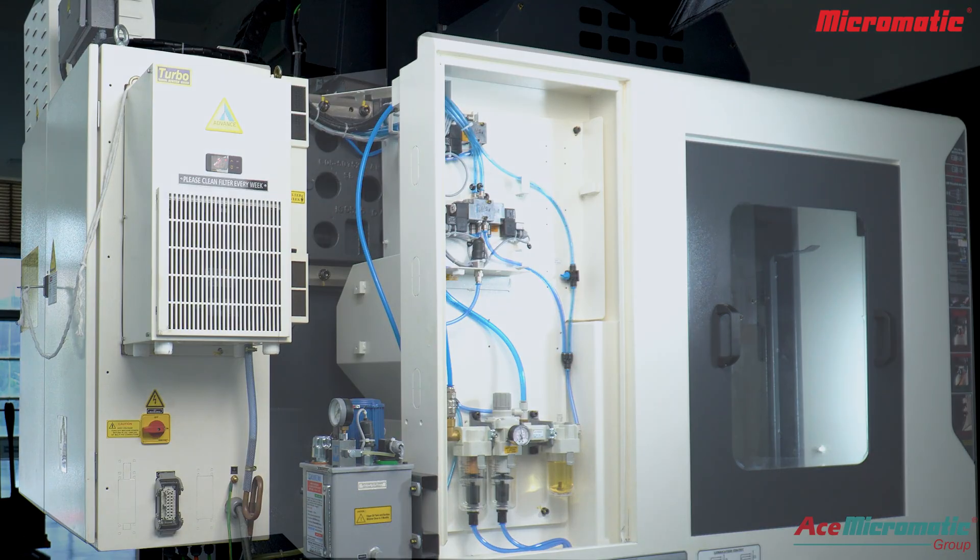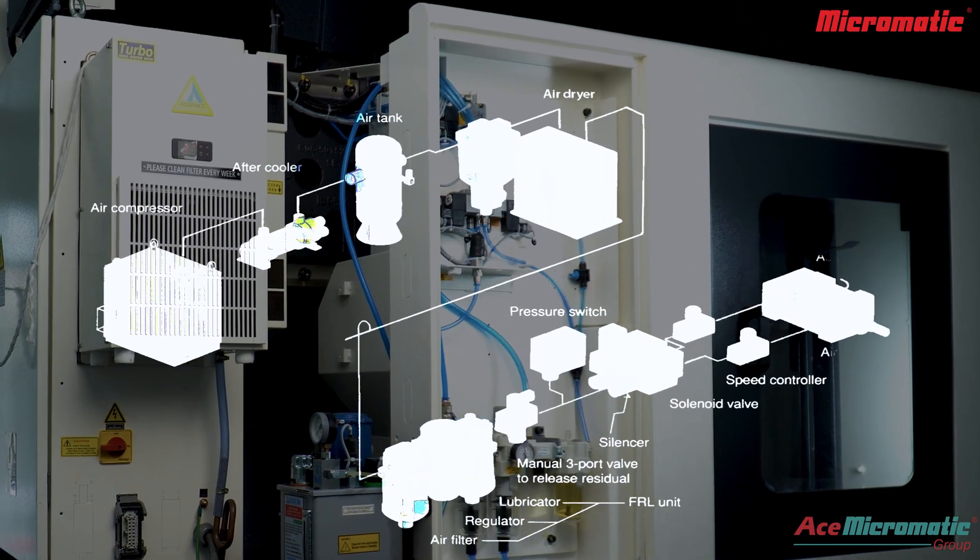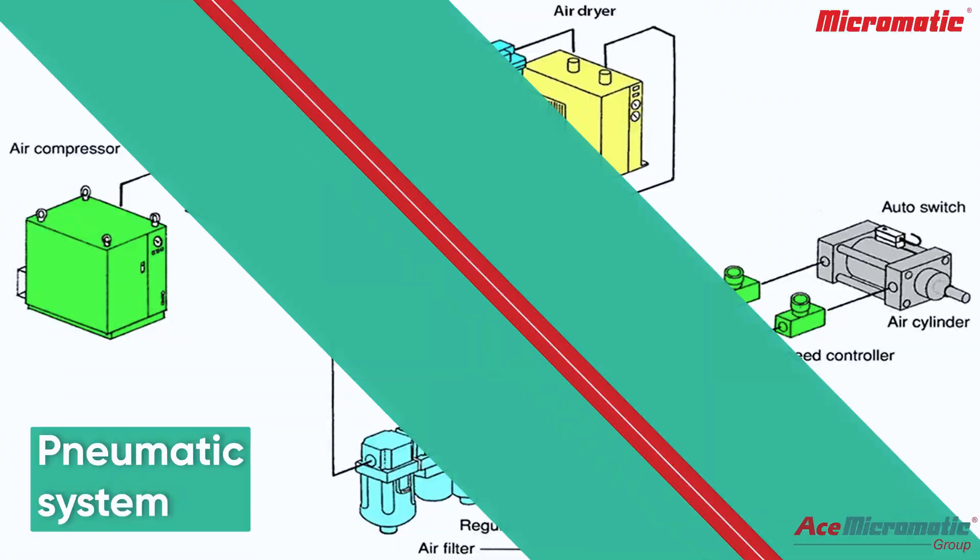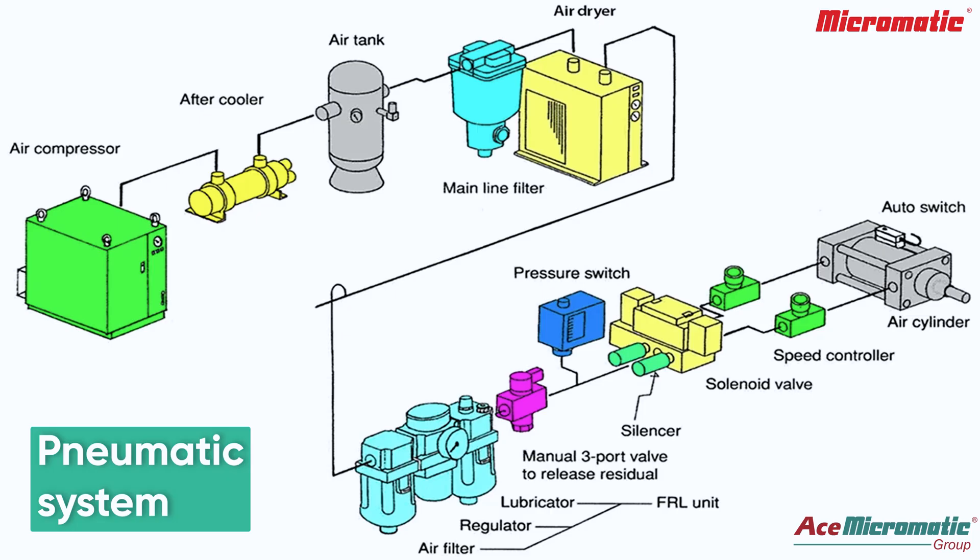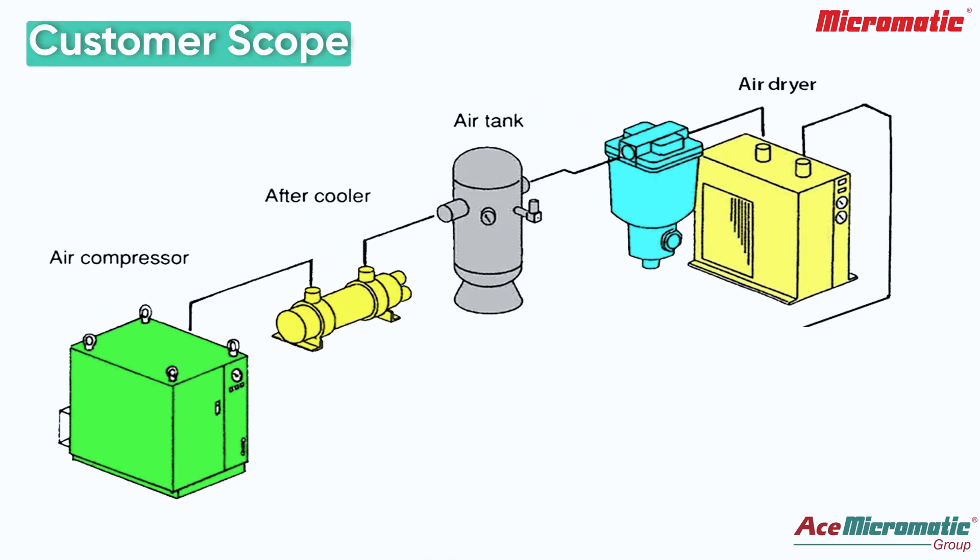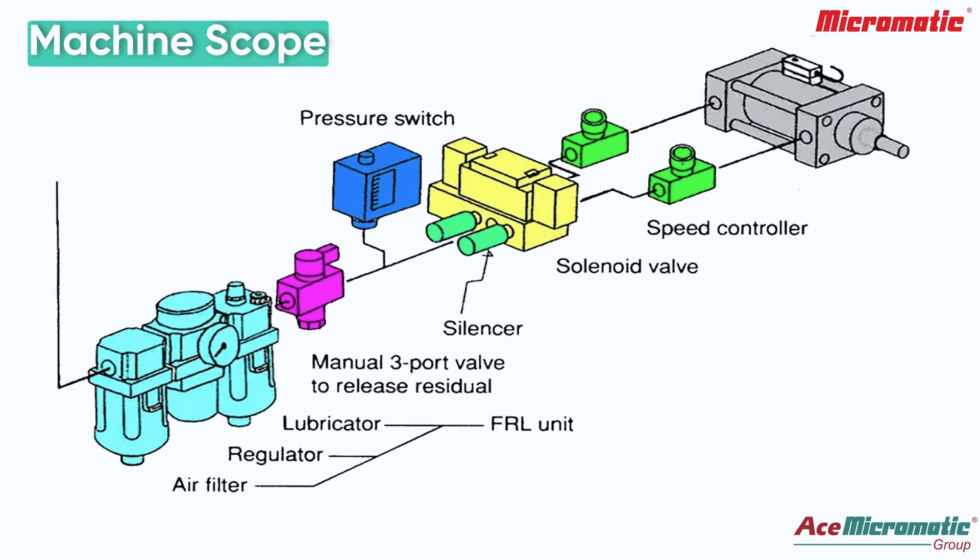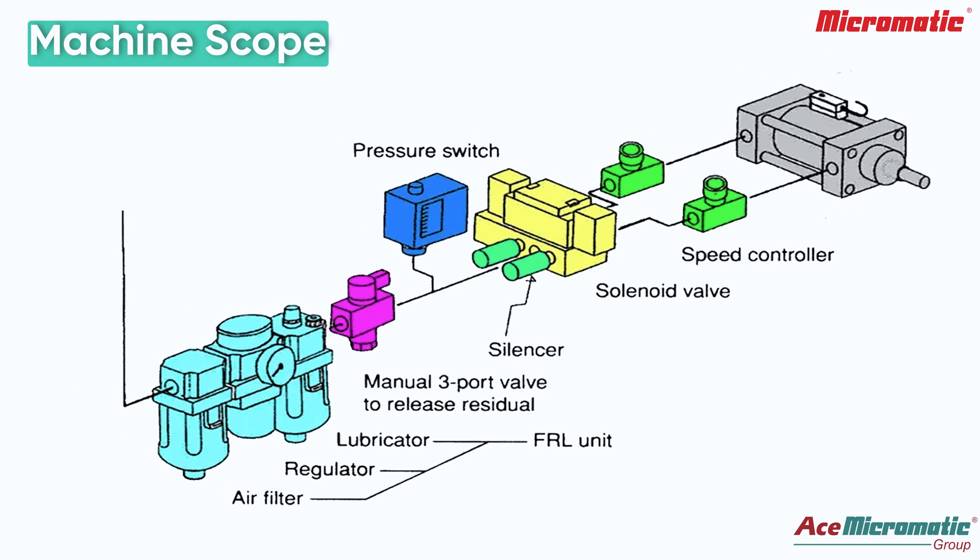A key system within the CNC machine is the pneumatic system. Pneumatics are used for lower power tasks. Air compressor and air dryer unit are covered under customer scope, while FRL unit, valves and sensors are covered under machine scope.